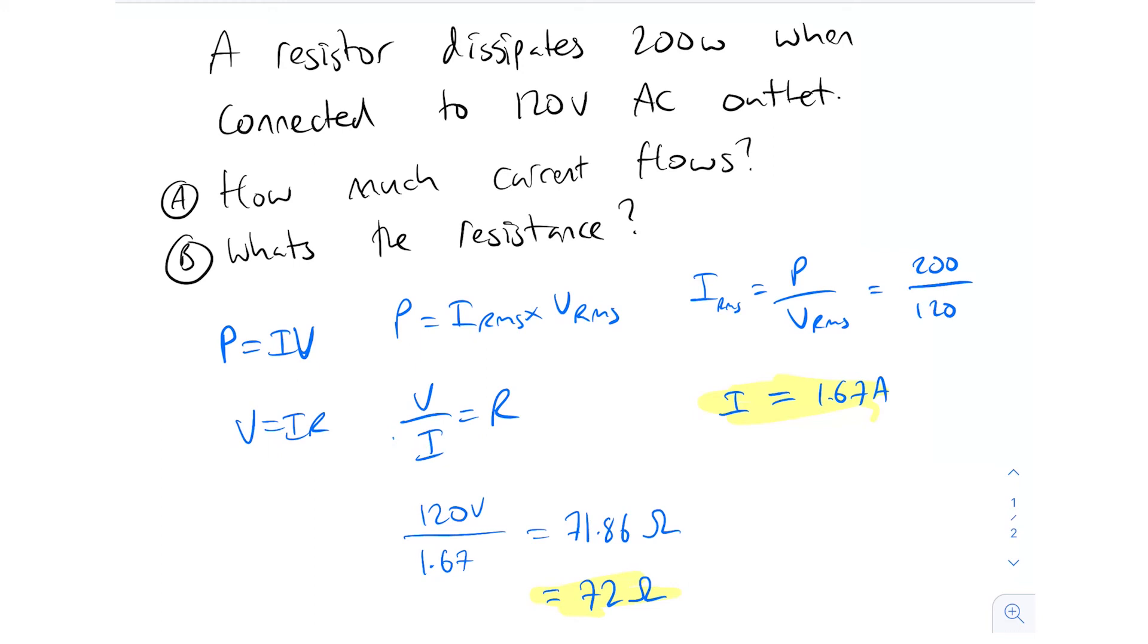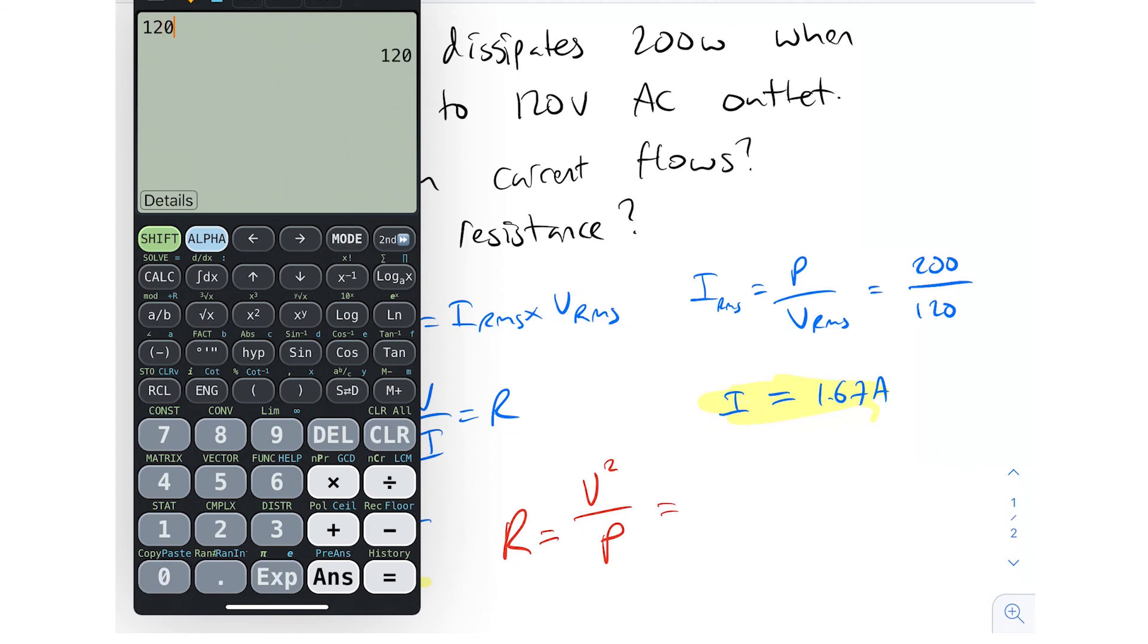So I just want to point out to you that you could have found the resistance without finding the current. And the way that you do that is you do the resistance equals the voltage squared divided by the power. So let's just do that together and I'll show you what I mean. Okay, so I made some more space. Let's bring up our calculator. So the voltage is 120 volts, right? So we square that. We get 14,400. Divide that by the power, which is 200, 14,400 divided by 200, and that gives us 72 ohms.